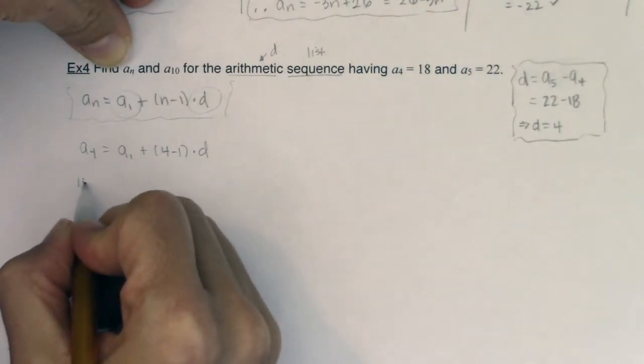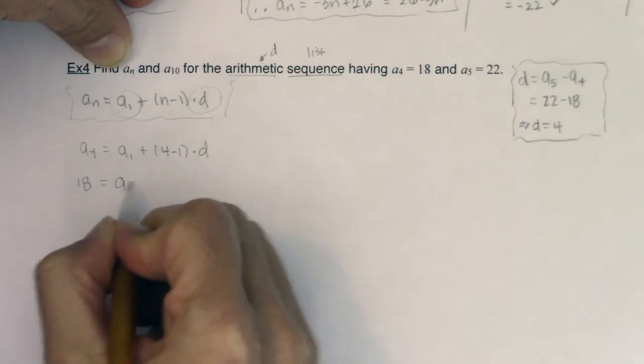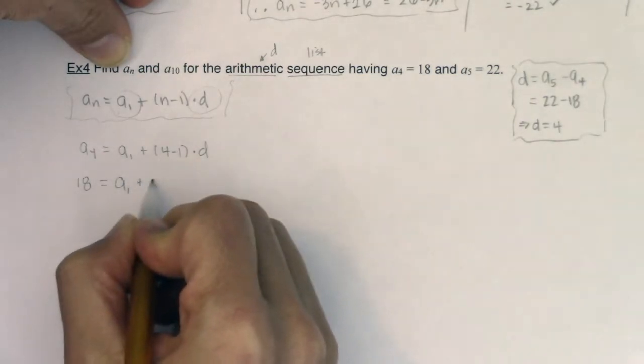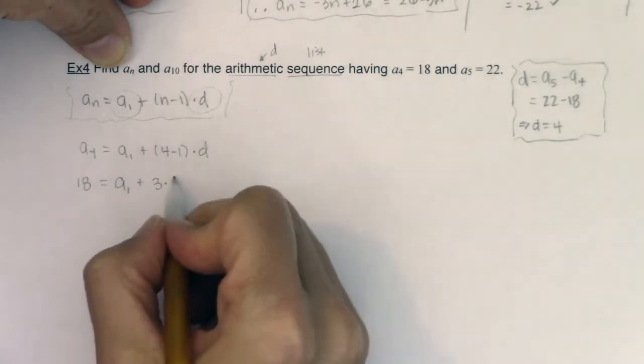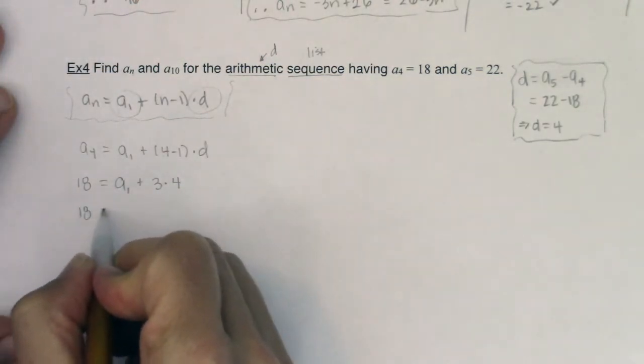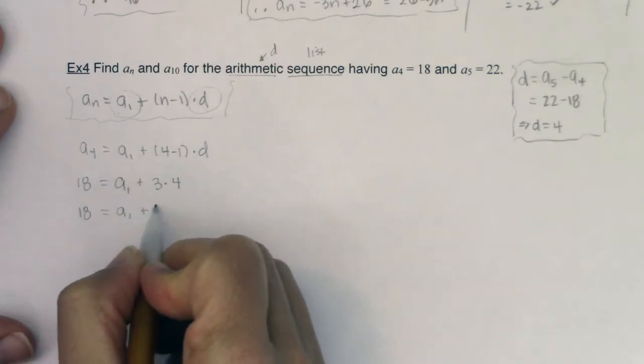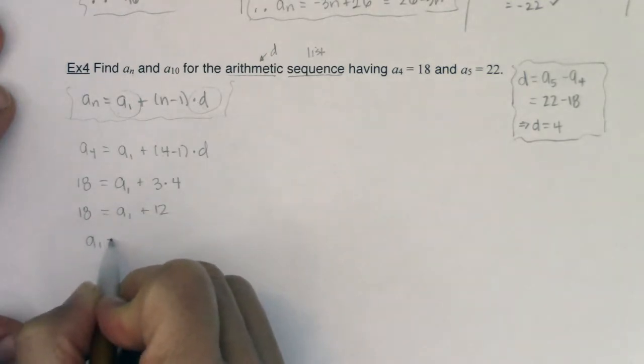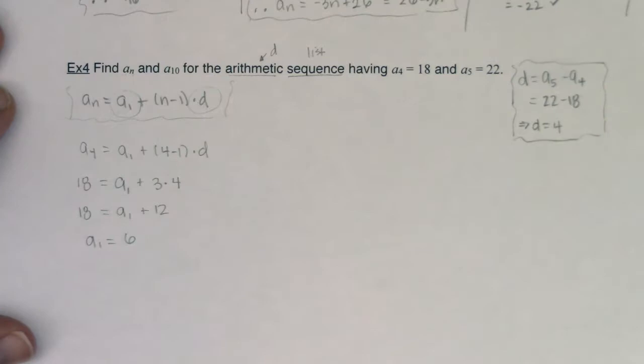Well we know a_4 is 18. I don't know a_1. 4 minus 1 would be 3 and we knew d was equal to 4. So now when I solve this I'm going to get 18 is equal to a_1 plus 12. So I think you see me arriving at a_1 equaling 6.